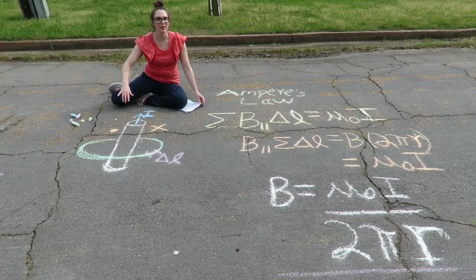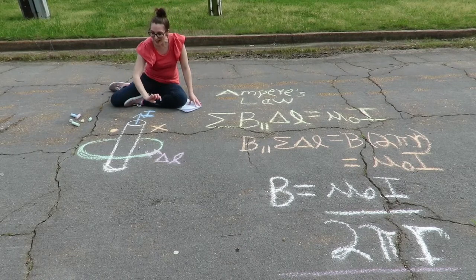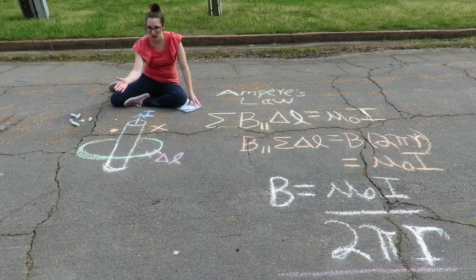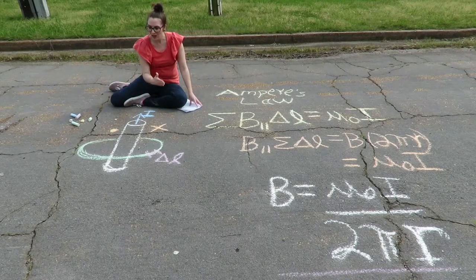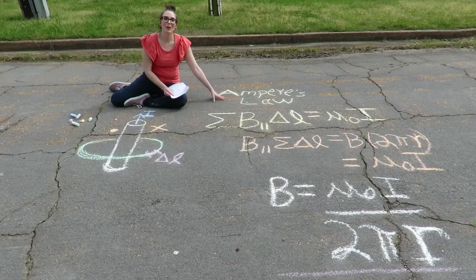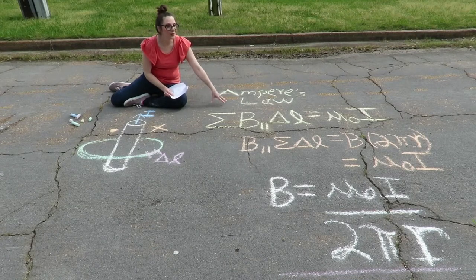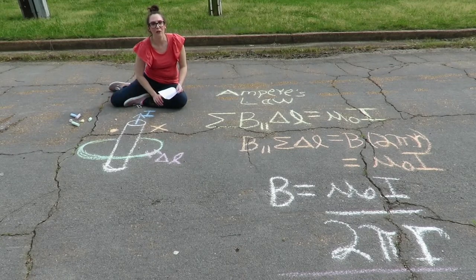We could take a compass and align it along the direction of that magnetic field and we'd see the compass needle change direction as we move it around this wire. We have a special law called Ampere's law which helps us figure out the magnetic field strength at some distance away from our current-carrying wire.